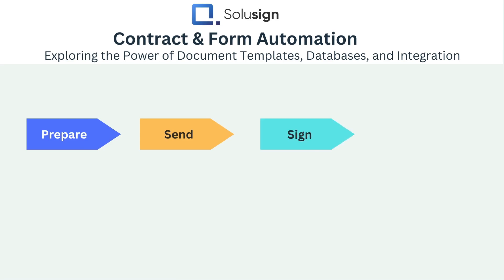Each document needs to be prepared, sent, signed, and managed. So when you're mapping out your process on a flowchart, you want to represent all the steps that occur during those four phases.